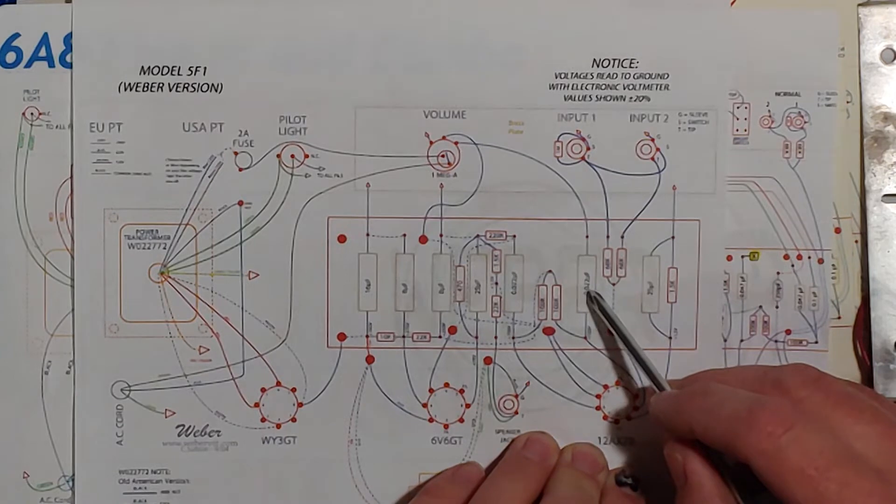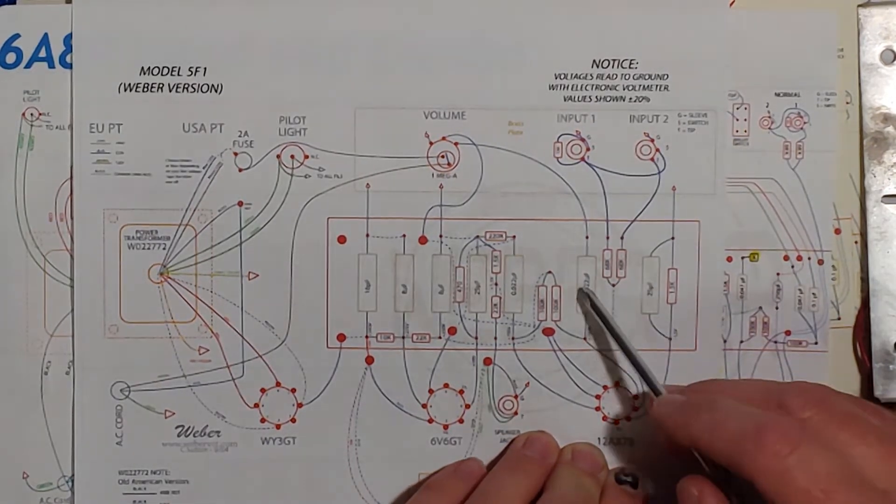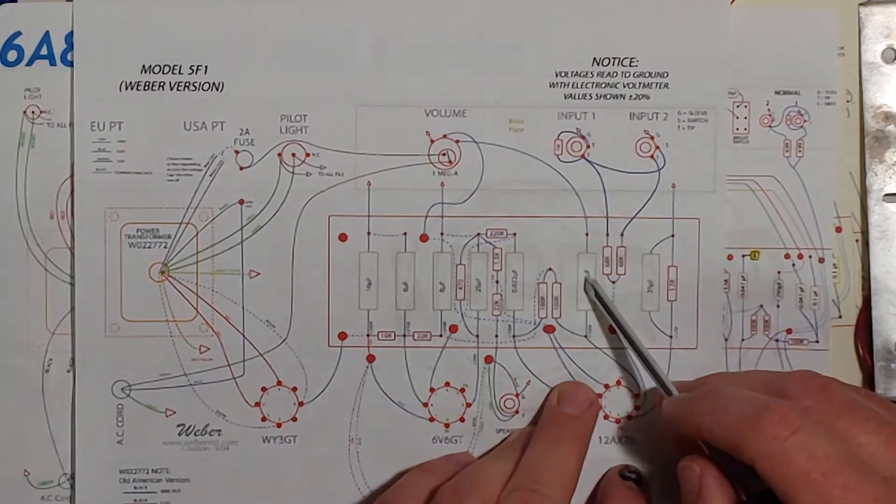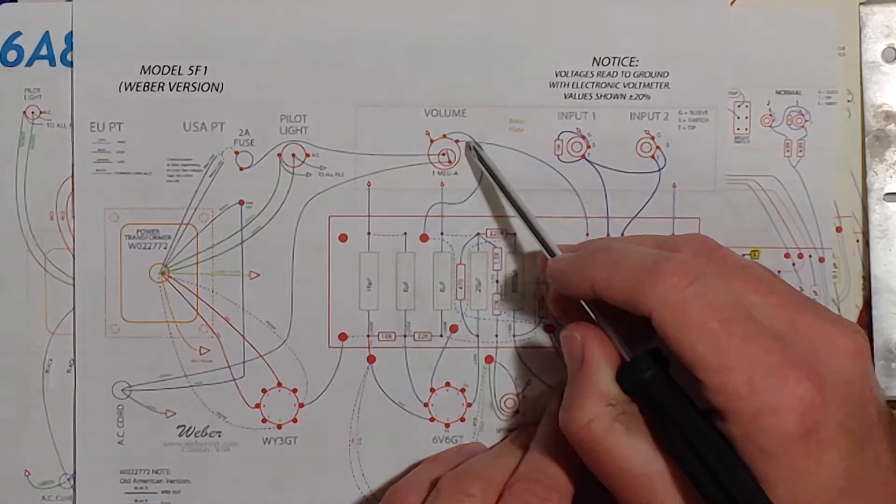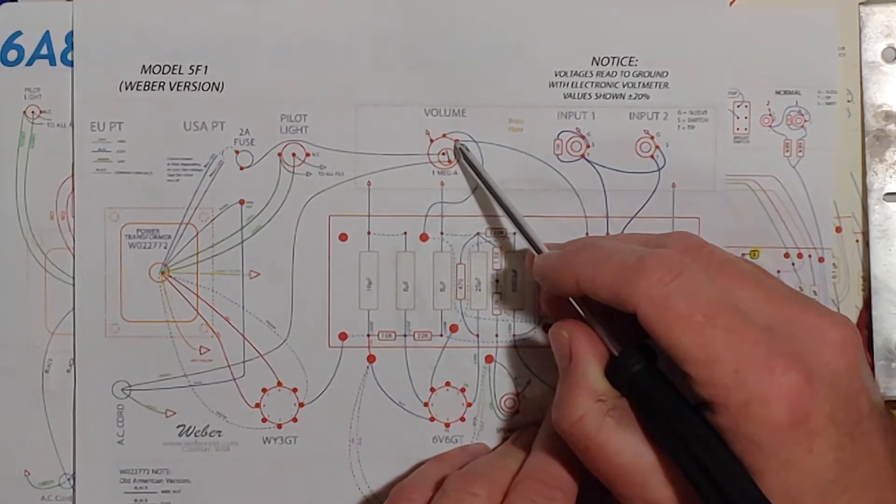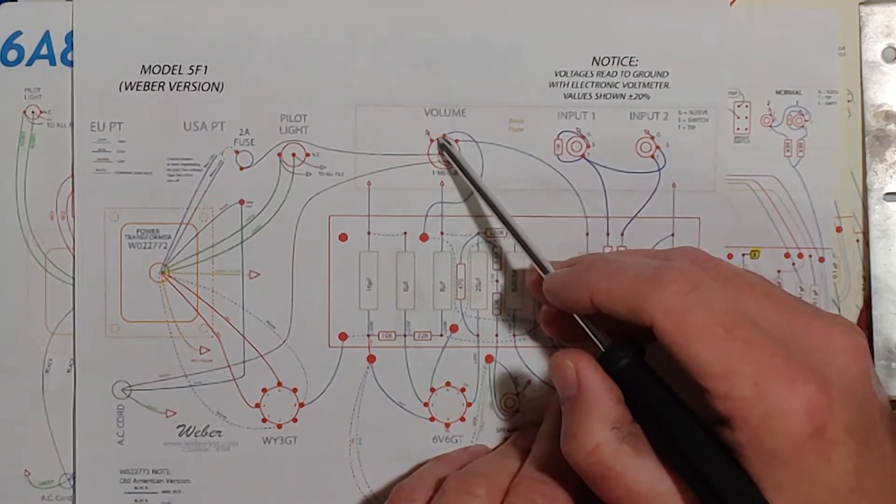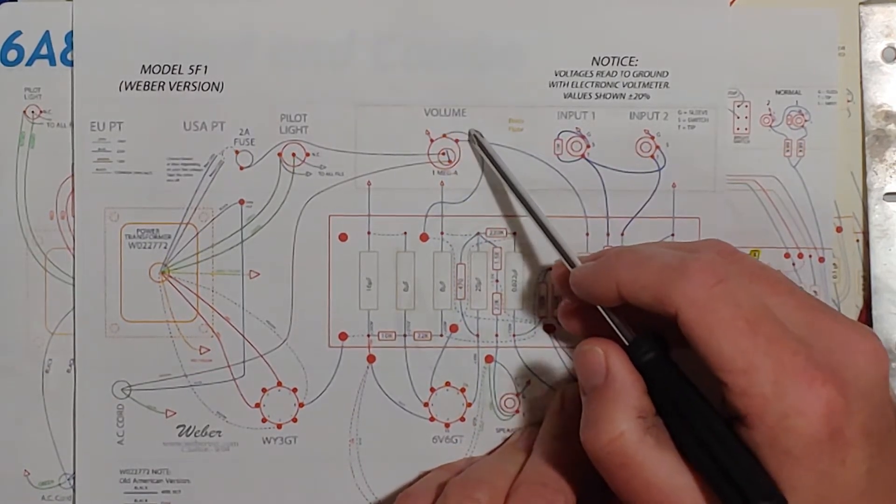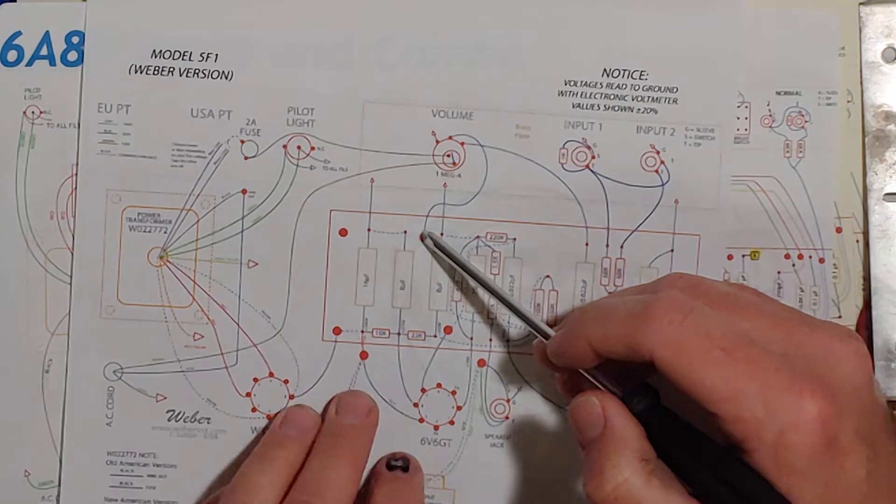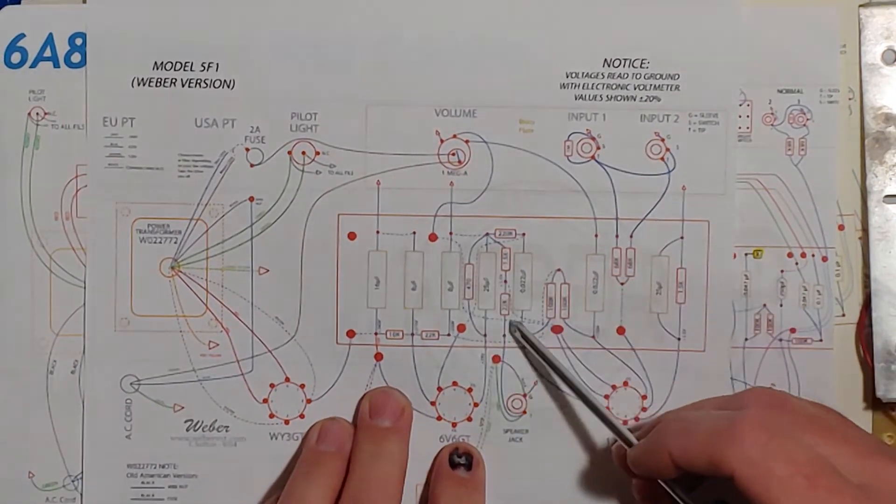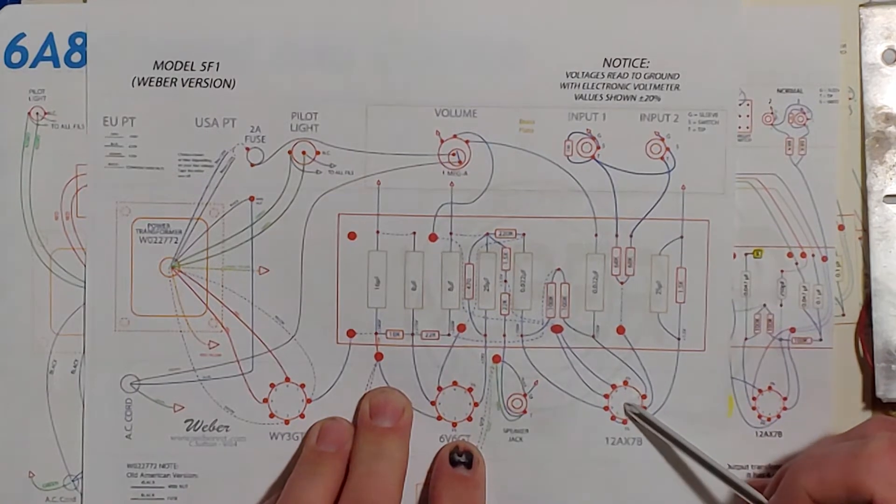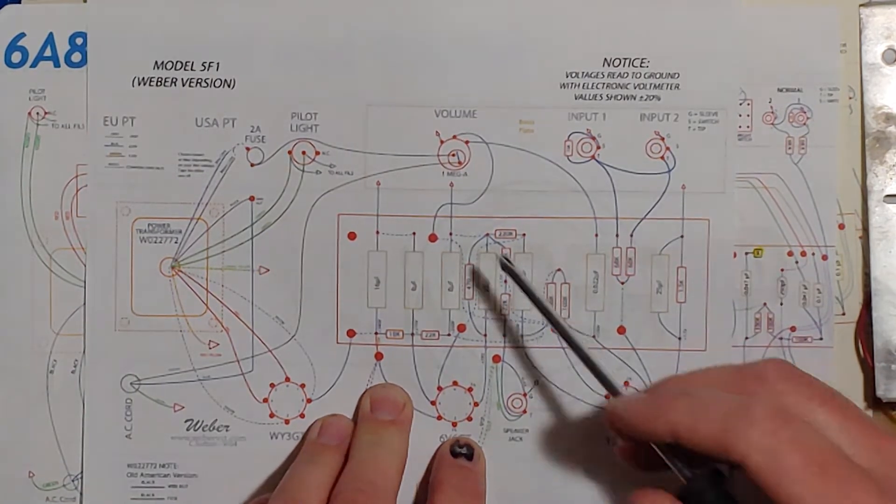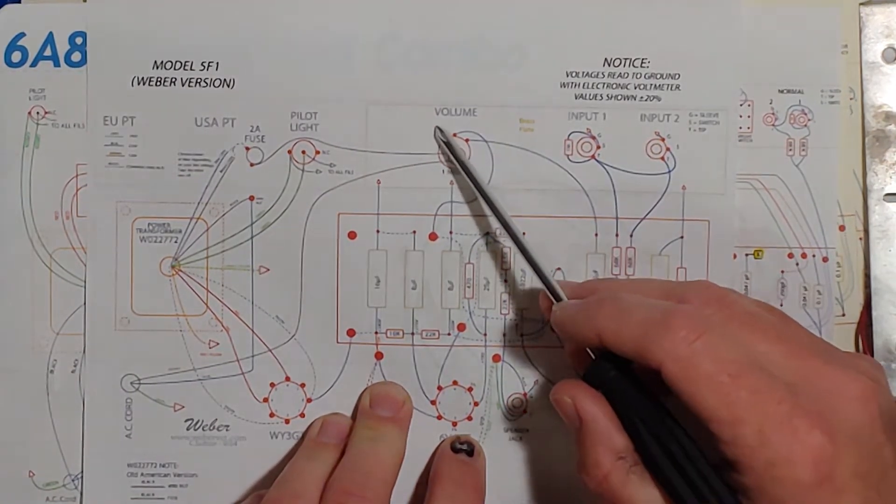Which is the tone stack and that goes straight to this potentiometer the right leg on it, and then this middle leg goes down goes down here all the way here and leads down to the number seven pin of the same preamp tube. Now the third leg just goes to ground.